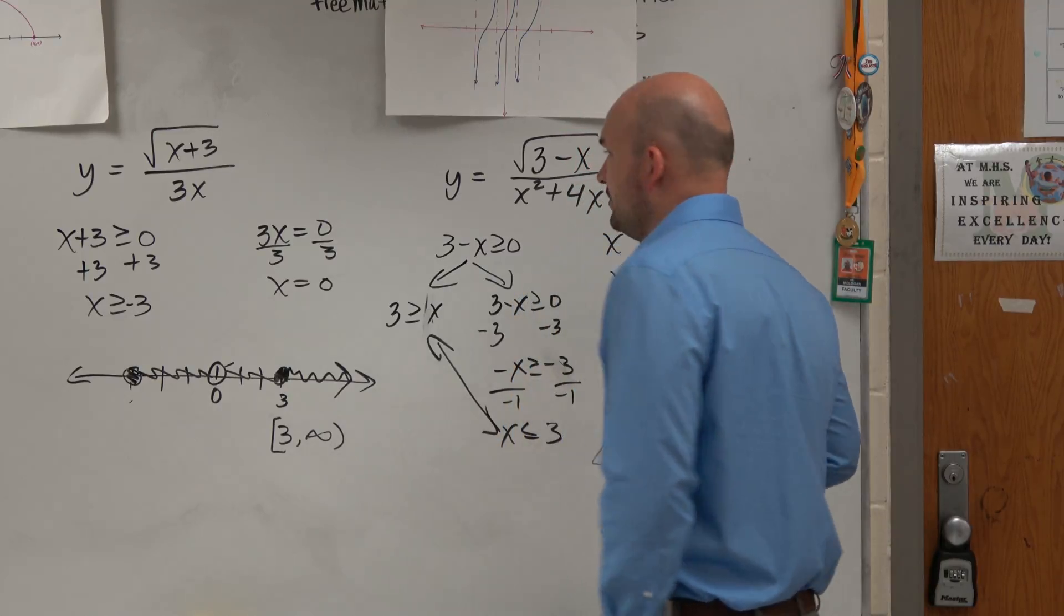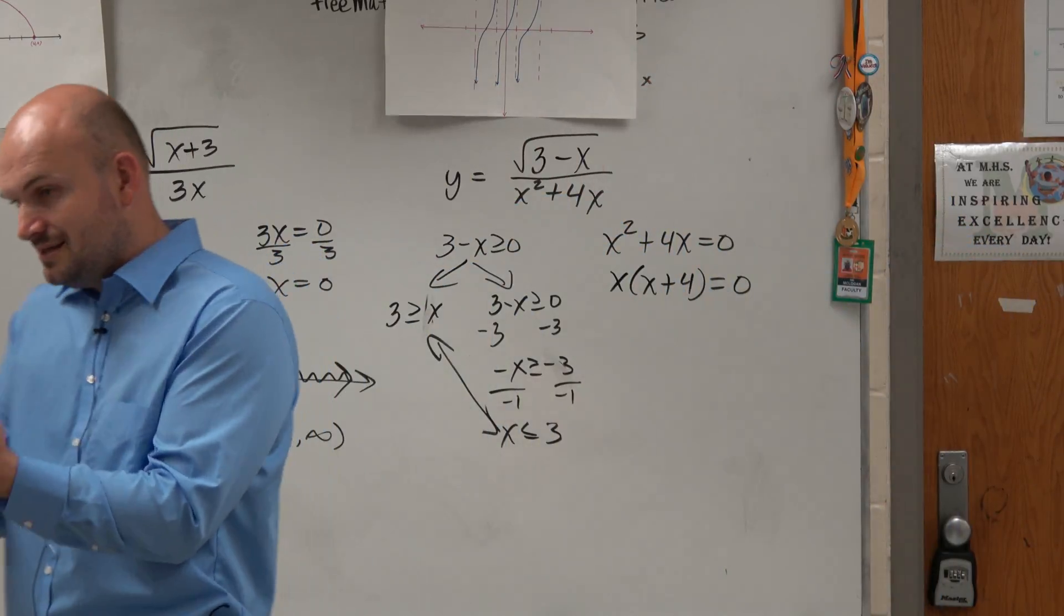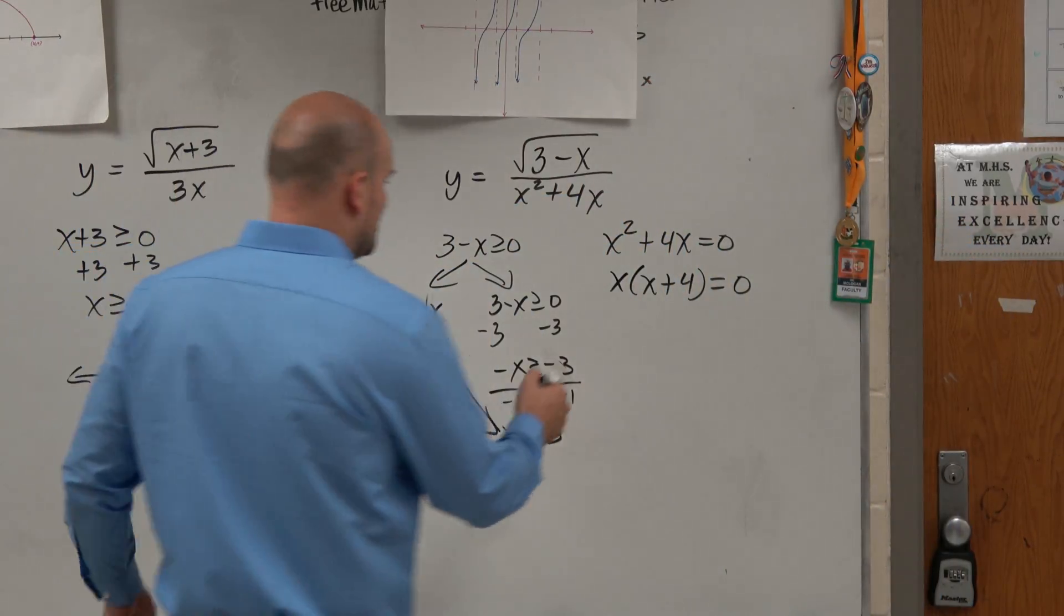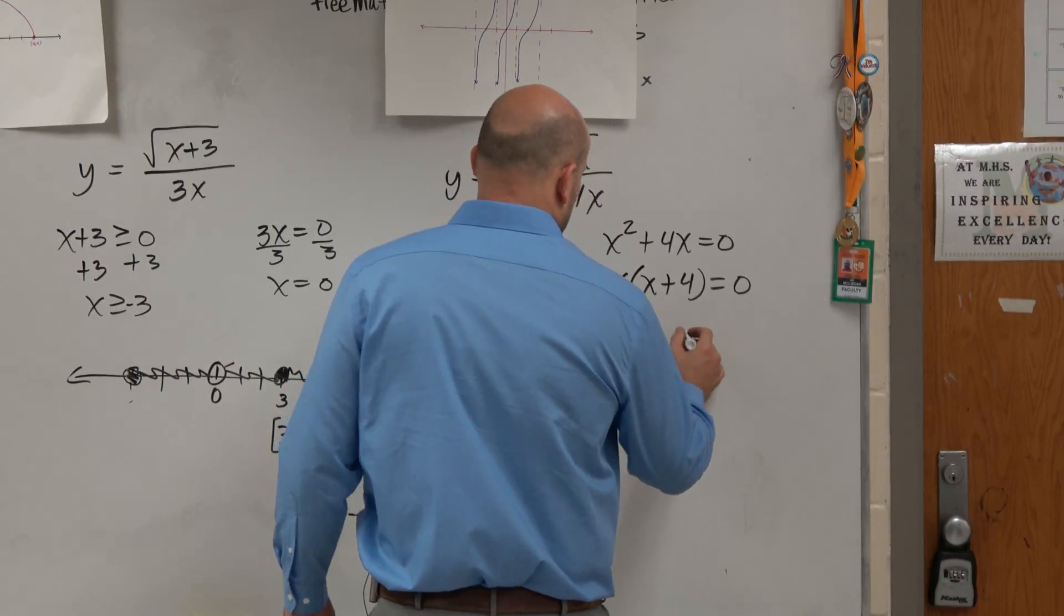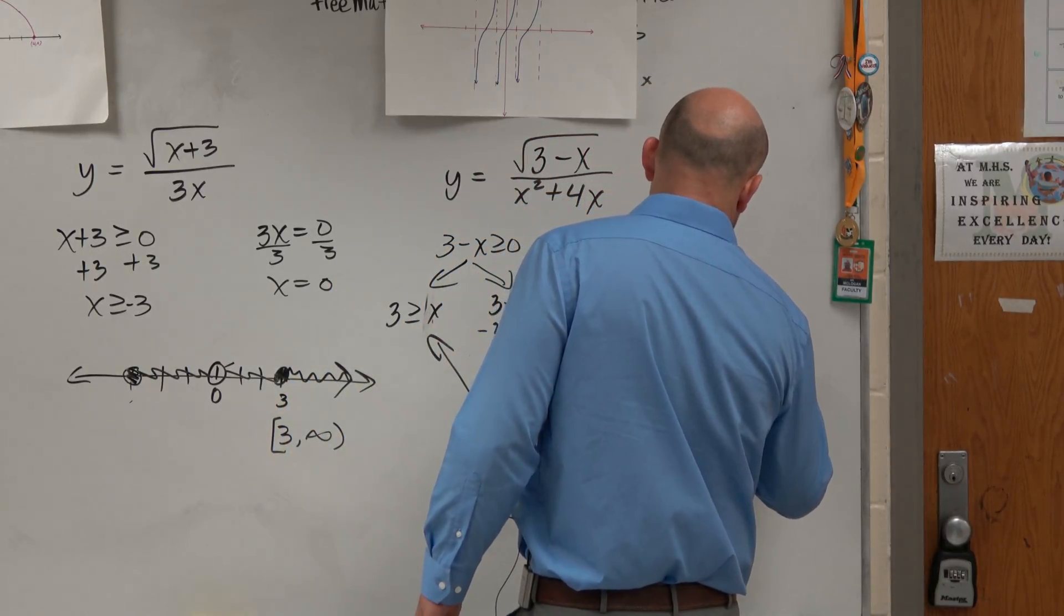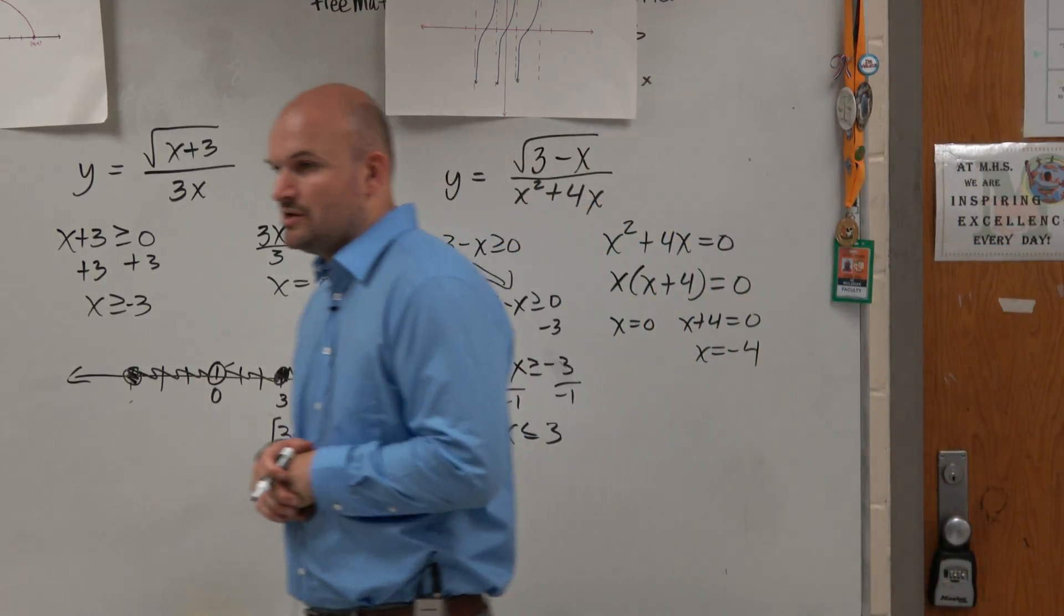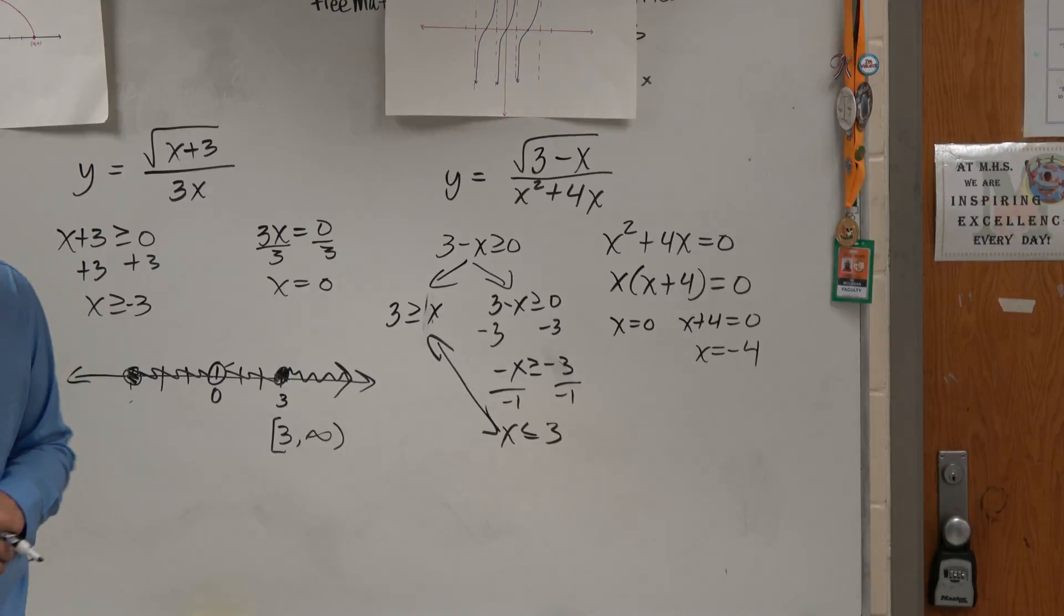And now I can use a zero product property. And remember guys, when you have a product equal to 0, you can set them both equal to 0. And then solve.